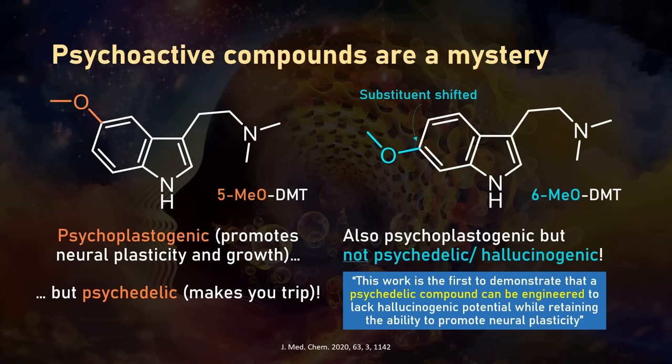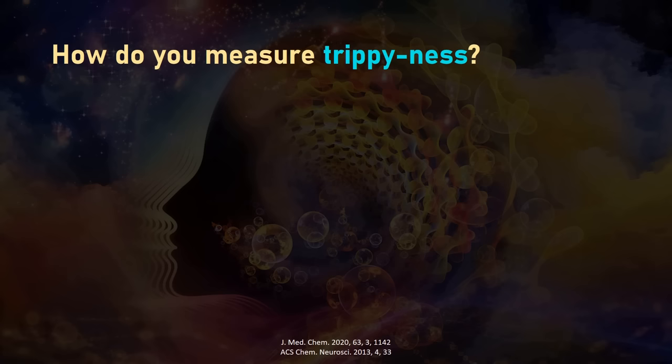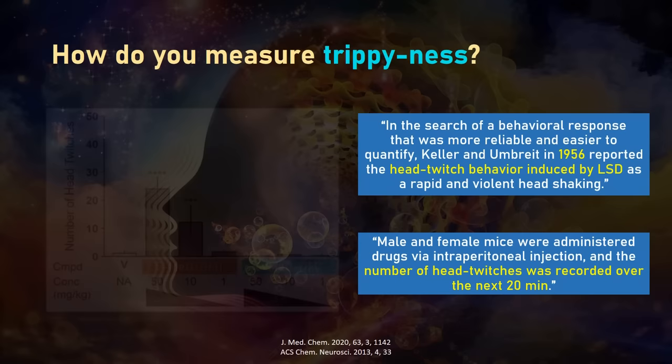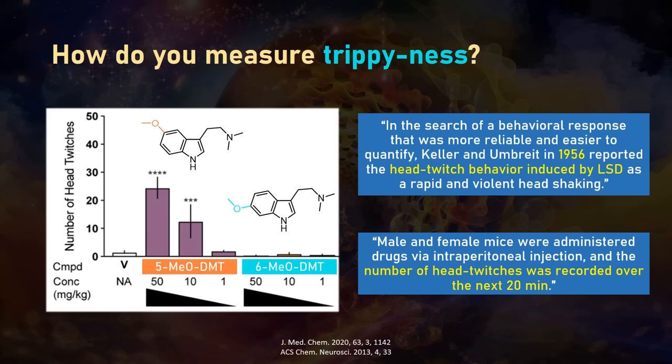If you wondered, trippiness can be estimated by looking at how often mice violently shake their head after administration of psychoactive drugs. This is a well-validated proxy for hallucinations and was first established already 70 years ago. You can see in this chart that while 5-methoxy DMT leads to head twitching in a nice concentration-dependent manner, the 6-methoxy isomer has no significant hallucinogenic activity.